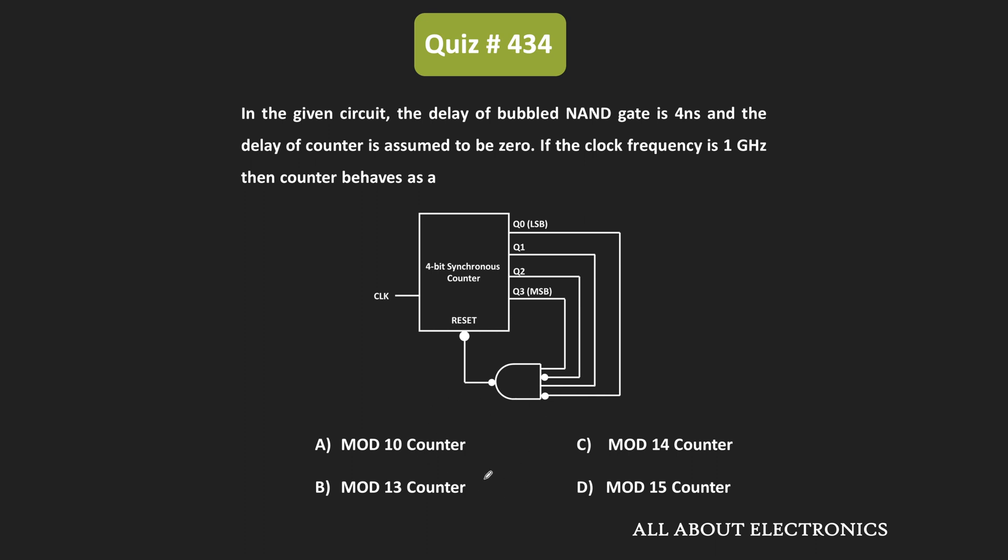So here as you can see, through this bubbled AND gate, the output of this counter is given to the reset input. And here, the propagation delay of this NAND gate is equal to 4 ns, while the clock frequency is equal to 1 GHz.